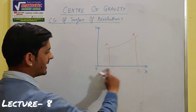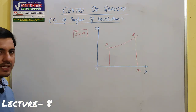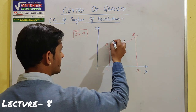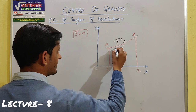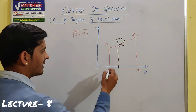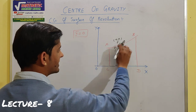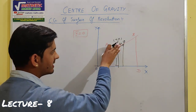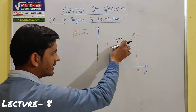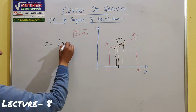अगर हम इस arc को x के about घुमाएंगे तो इसकी center of gravity x axis में होगी, और x axis में y coordinate 0 होता है — यानी इसका y bar = 0 आएगा। अब बात करते हैं x coordinate की। उसके लिए हम p, q point लेते हैं जिसके coordinates (x, y) हैं। यह जो length है यह ds लेते हैं। जब यह elementary part p-q घुमेगा तो उससे एक surface बनेगा।